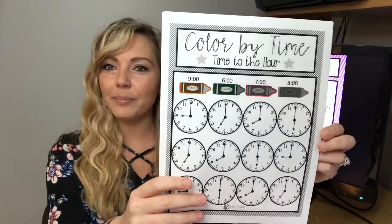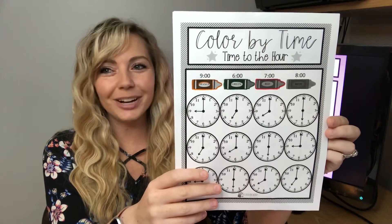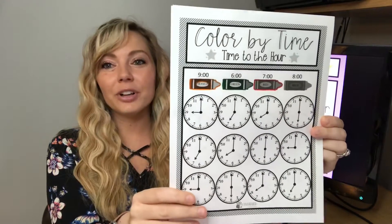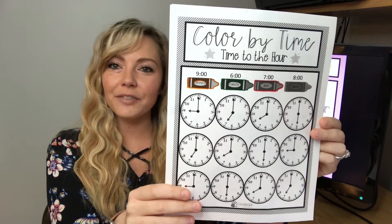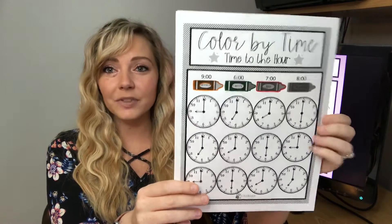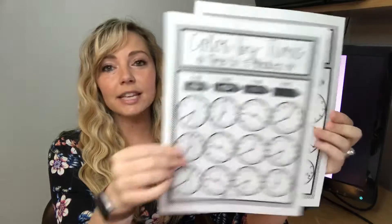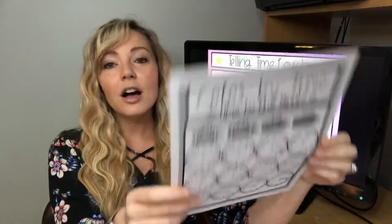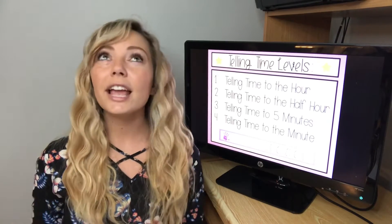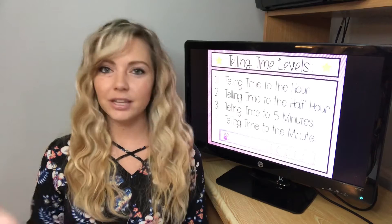Our first activity is color by time. I do not have a color printer at home, so my husband colored in three of the crayons — he forgot one, but thank you for your effort, Blake. Students will color nine o'clock orange, six o'clock green, red will be seven o'clock, and blue will be eight o'clock. I like all of my students to be doing the same activity, so that was telling time to the hour. Here's telling time to the hour and half hour, time to five minutes, and then lastly, telling time to the minute. A lot of times in special education, our students are stuck doing a completely different activity than their peers, and I hate that. That is why I always have the same activities going, just at different levels, to meet the needs of everyone.